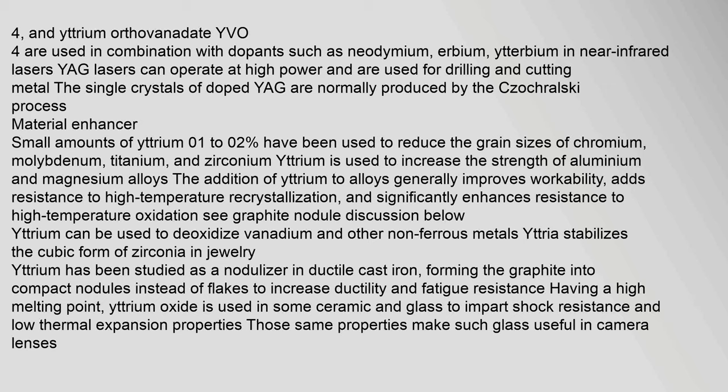Small amounts of yttrium (0.1–0.2%) have been used to reduce the grain sizes of chromium, molybdenum, titanium, and zirconium. Yttrium is used to increase the strength of aluminium and magnesium alloys. The addition of yttrium to alloys generally improves workability, adds resistance to high-temperature recrystallization, and significantly enhances resistance to high-temperature oxidation. Yttrium can be used to deoxidize vanadium and other non-ferrous metals. Yttria stabilizes the cubic form of zirconia in jewelry. Yttrium has been studied as a nodulizer in ductile cast iron, forming the graphite into compact nodules instead of flakes to increase ductility and fatigue resistance. Having a high melting point, yttrium oxide is used in some ceramic and glass to impart shock resistance and low thermal expansion properties, making such glass useful in camera lenses.